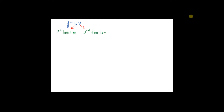Now we are going to learn to differentiate the product of two functions using the product rule. Let's say we have two functions of x, u and v being multiplied together, that is y = u times v. I call u the first function and v the second function. The derivative dy/dx is given by: first, copy down the first function u, multiply by the derivative of the second function dv/dx, plus copy down the second function, multiply by the derivative of the first function. That is, for the product rule: dy/dx = u(dv/dx) + v(du/dx).